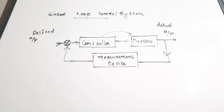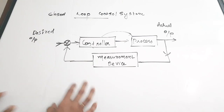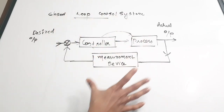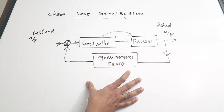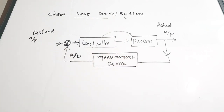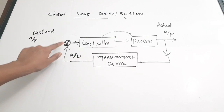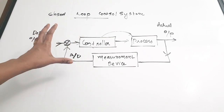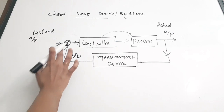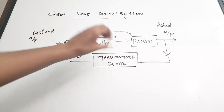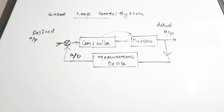The measurement device is an analog device — for example, if temperature control is happening, it will be a thermometer producing an analog signal. That signal is converted using an A-to-D converter and fed to the comparison unit. If there are variations, that signal is sent to the controller, and the controller controls the process accordingly. This is how a closed loop control system works.